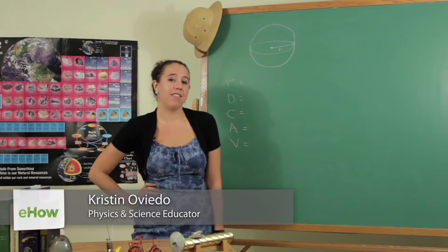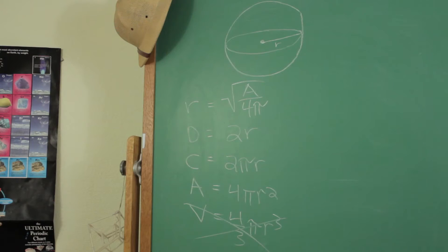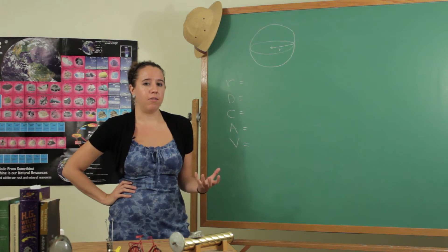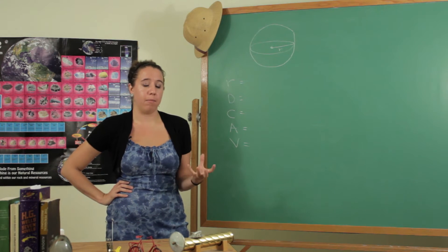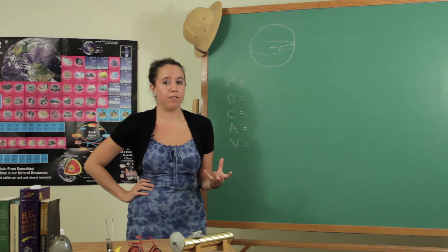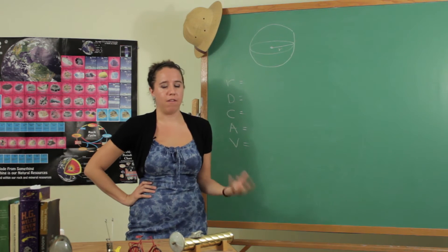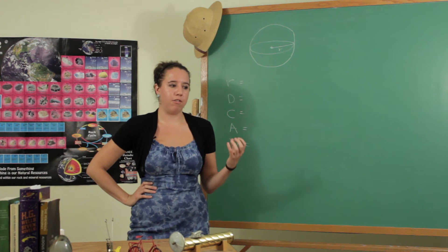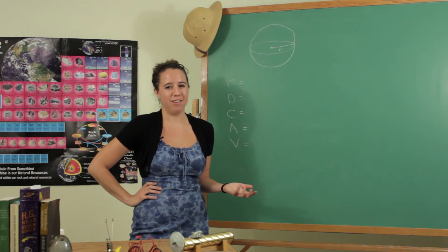I'm Kristen Oviedo and this is how to figure out the radius of a sphere without knowing the volume. This problem is made a lot simpler by the fact that you don't really have a whole lot of options. A sphere is a very simple object — unless you're talking post-calculus, it's very simple. There are only a few parameters that define it, so you just have to choose among those parameters to find the variable you're looking for.